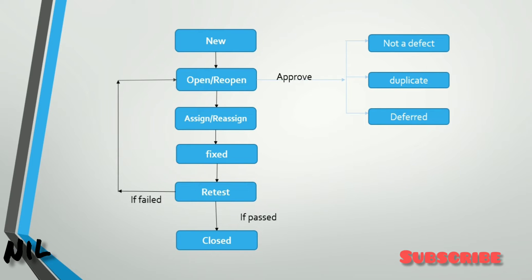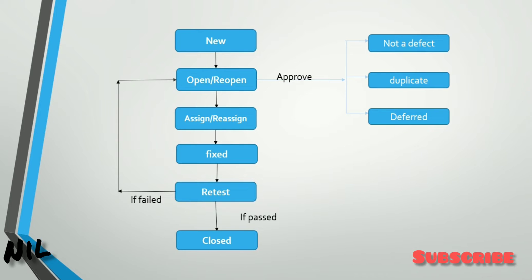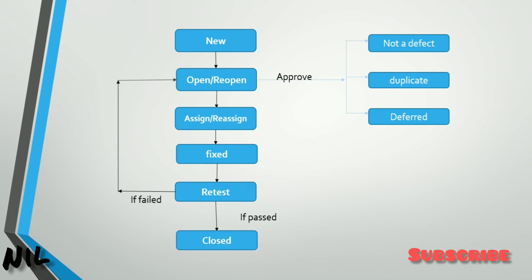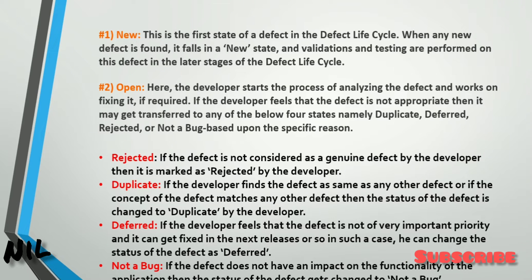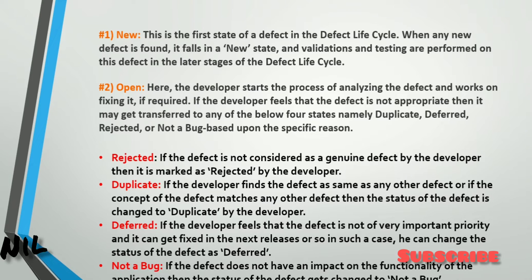When the software tester finds a defect, it becomes a new defect. This is the first stage of the defect life cycle. When any new defect is found, it falls into the New state. Validation and testing are performed on this defect in the later stages of the defect life cycle.